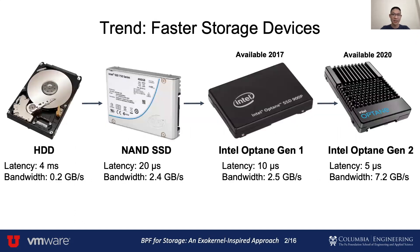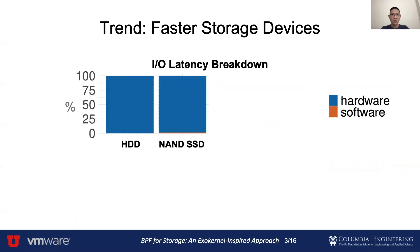With new technology like Xenon SSD and 3D Crosspoint, storage devices are getting much faster. Intel Optane SSD Gen 2 can achieve 5 microsecond latency and 7 gigabyte per second bandwidth. For HDD and old SSD, the hardware latency dominates the total access latency. However, as the devices are getting much faster, the software overhead of the IO request becomes more significant.